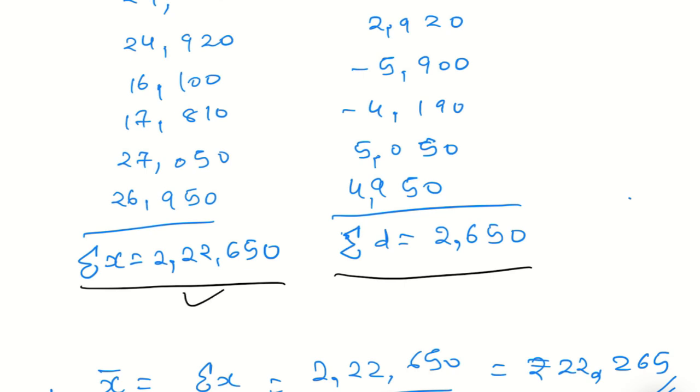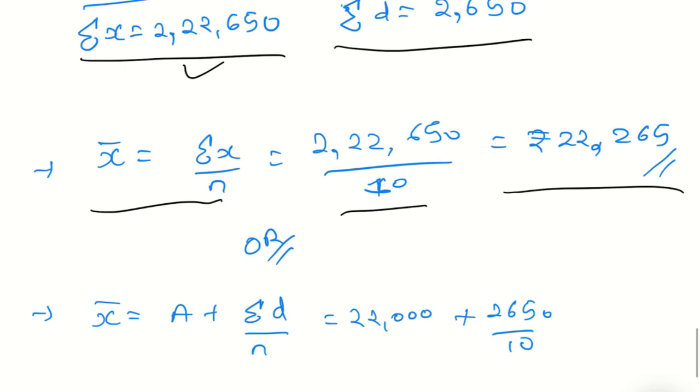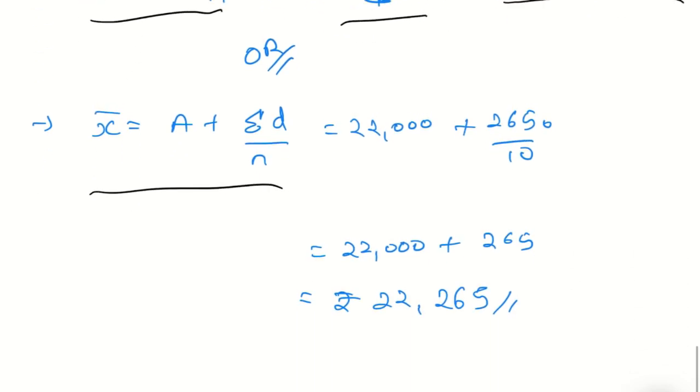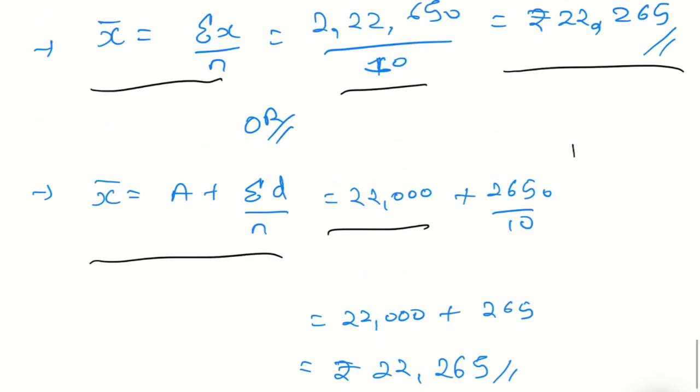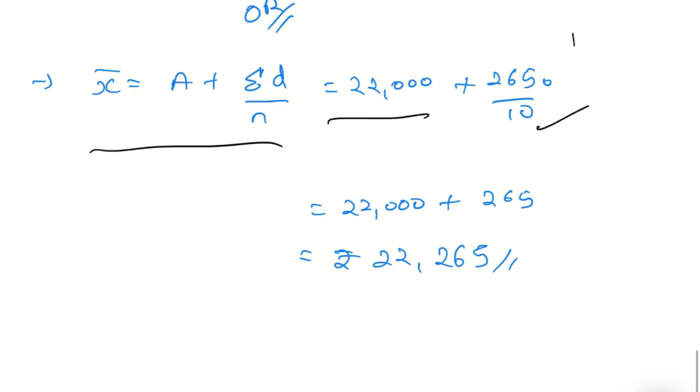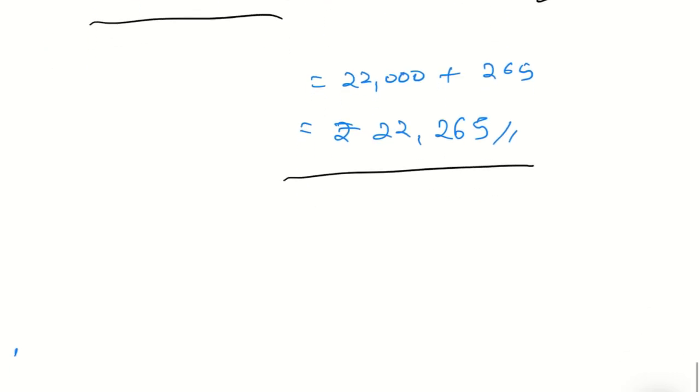Using the formula x-bar equals a plus sigma d upon n, we have x-bar equals 22,000 plus 2,650 divided by 10. That's 22,000 plus 265, which equals 22,265. This is our final answer. In the next video we will talk about mean of grouped data, then median and mode.